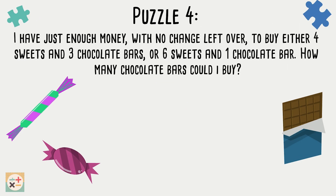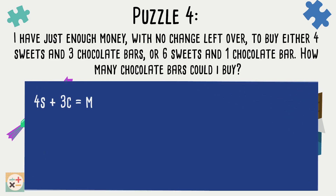For the final puzzle, we can use simultaneous equations to solve this. Let's create some equations from the information we are given in the puzzle. We can use the variable s to represent the amount of sweets, the variable c to represent the amount of chocolate bars, and the variable m for the amount of money we have.